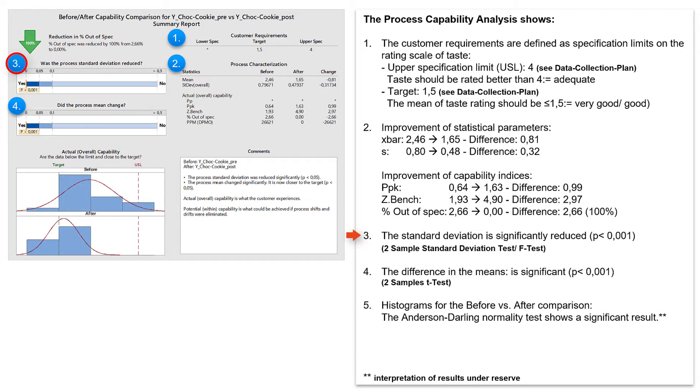The chart for the F-test indicates that the standard deviation of the ratings is significantly reduced in the new sample. And the next diagram also shows, based on the two-sample t-test, that the mean value of the ratings has improved significantly, from 2.46 to 1.65. And this improvement is also practically relevant, as we think. We now offer our customers a better and more consistent taste experience.